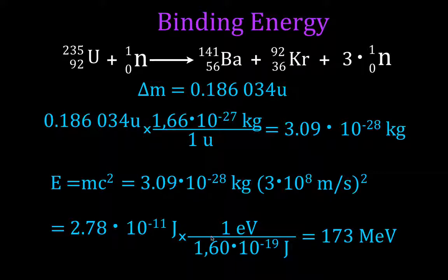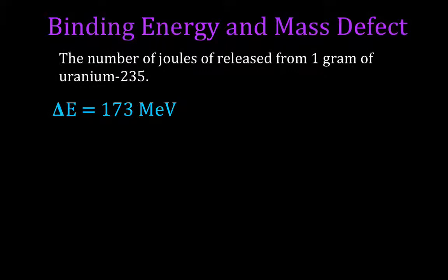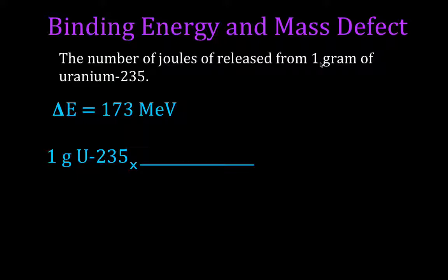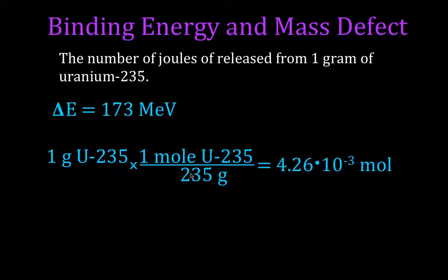We're also asked to find how much energy is released from one gram of uranium-235. We know the energy from one reaction, so we need to know how many atoms of uranium-235 are in one gram. We take one gram and convert it into the number of moles: one mole of uranium-235 has a mass of 235 grams, so one gram divided by 235 gives us 4.26 × 10⁻³ moles.